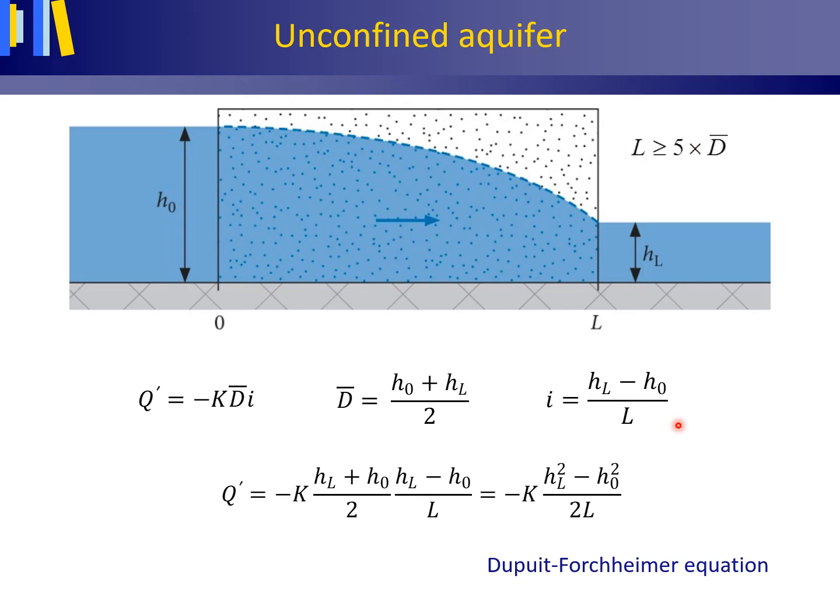Inserting this in the Darcy equation and rewriting delivers the Dupuit-Forchheimer equation, an equation for the volume flux of steady groundwater flow in an unconfined aquifer between two parallel, fully penetrating canals with different water levels.